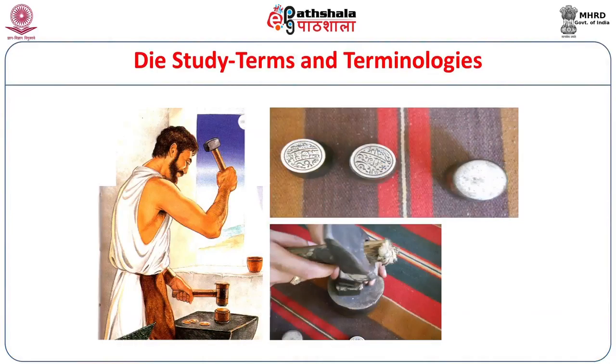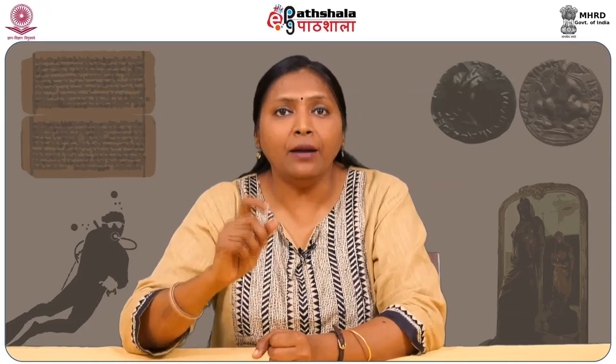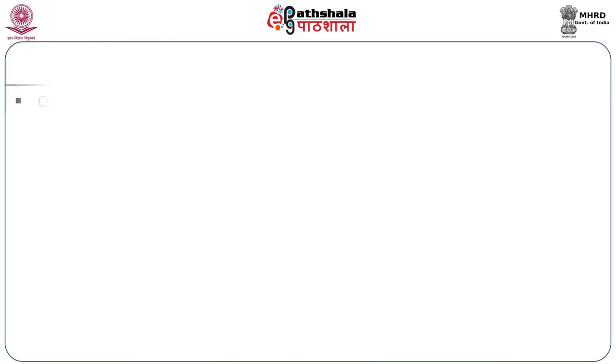Now let us move to the topic of Die studies and Die analysis. A die is actually the tool used for minting die-struck coins. We have two dies — the obverse die and the reverse die. The reverse die is kept on the anvil, the coin blank is placed on it, then the obverse die is placed on top with a metal protector, and the hammer blow mints the coin. The technique and methodologies used for examining dies through the coins they produced is known as die analysis.